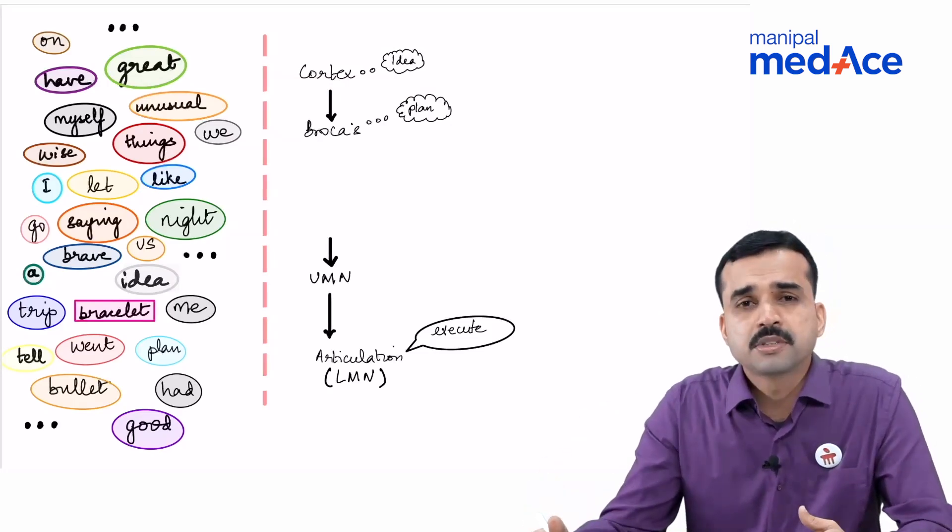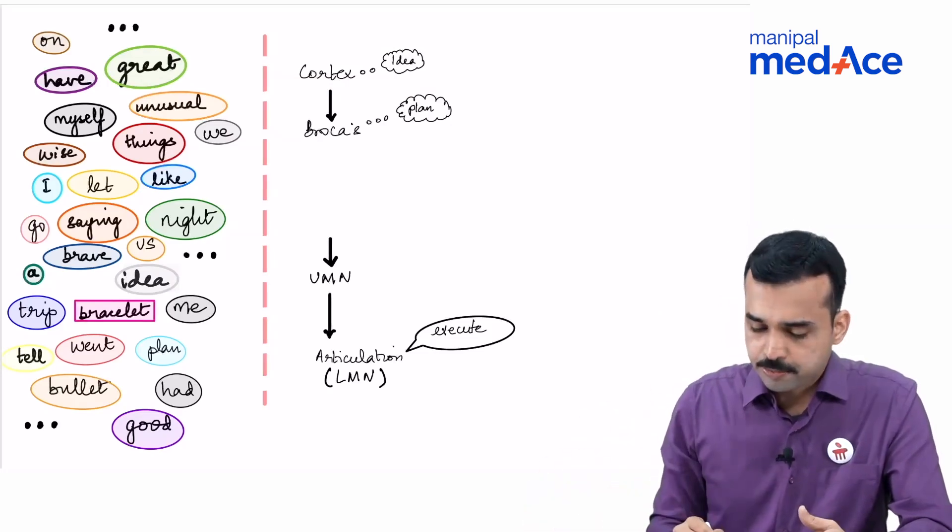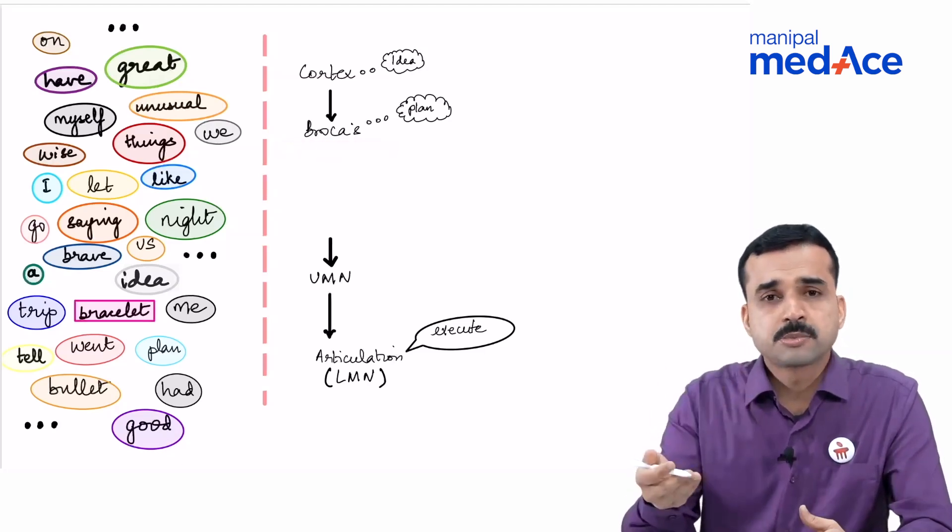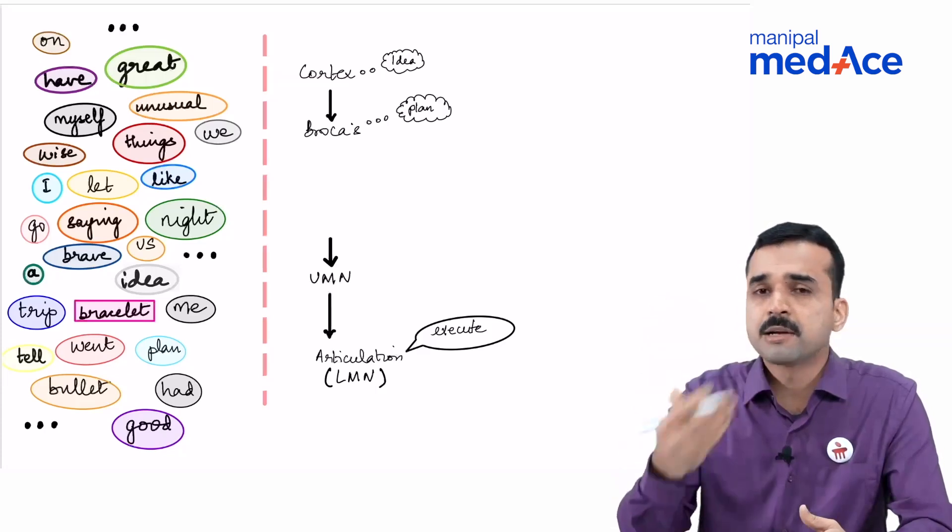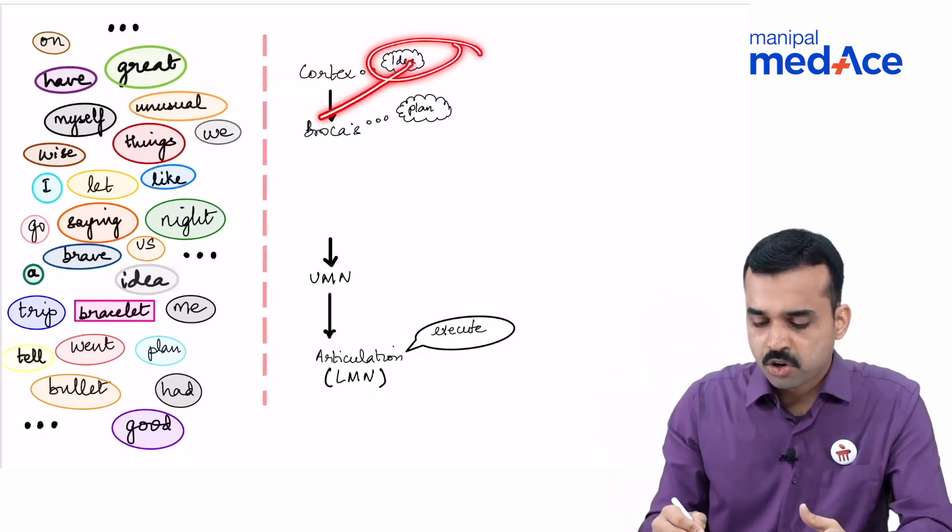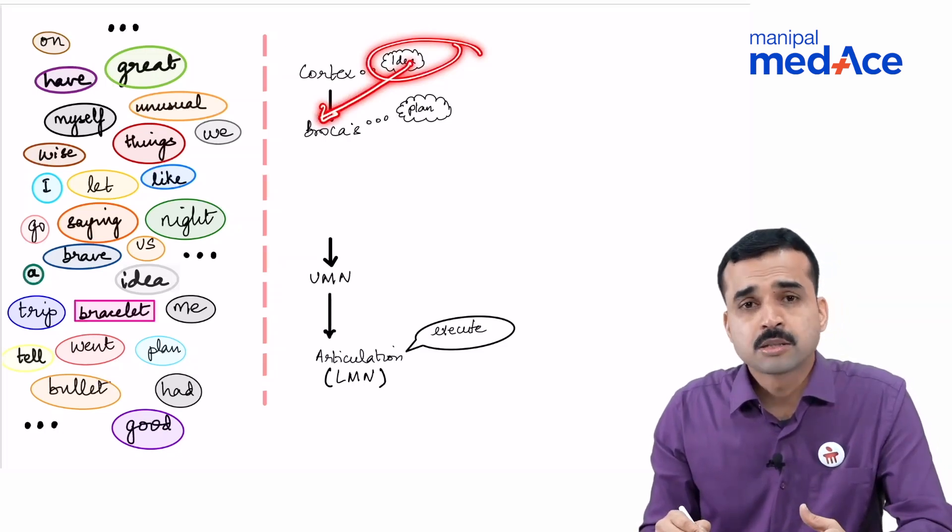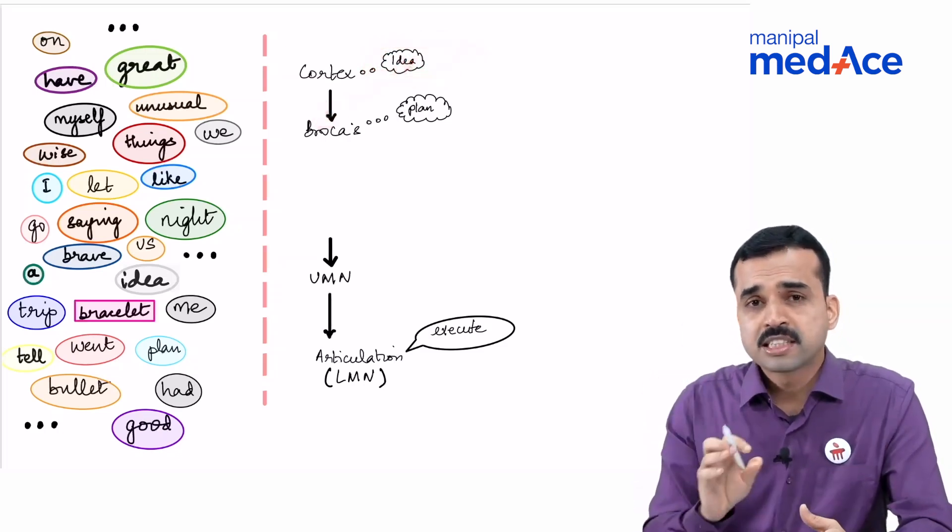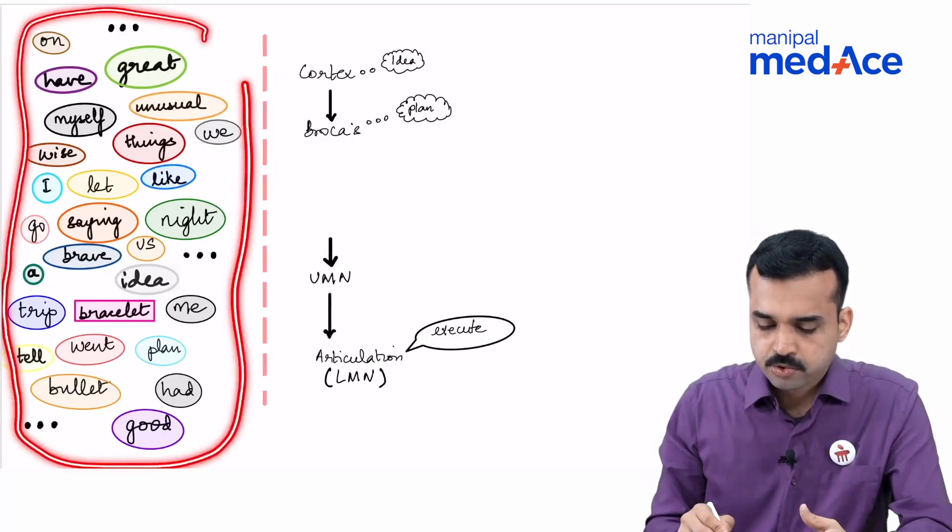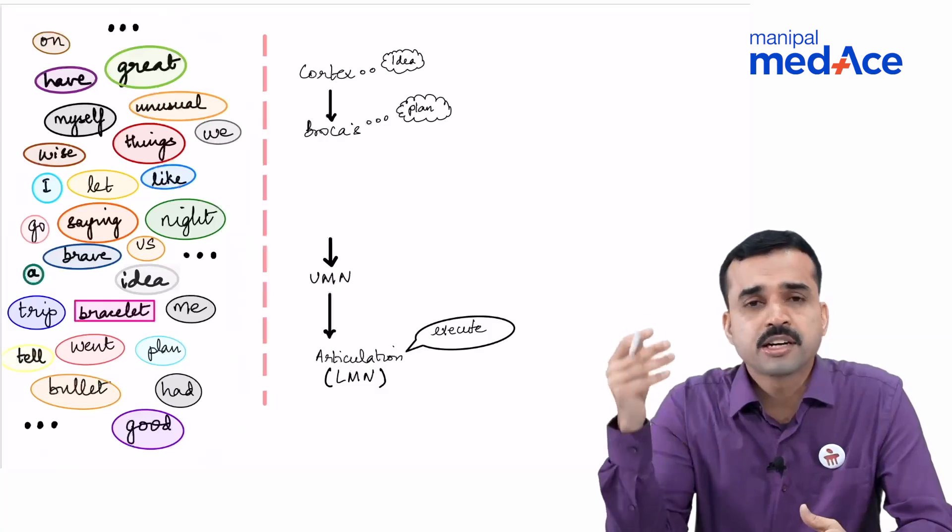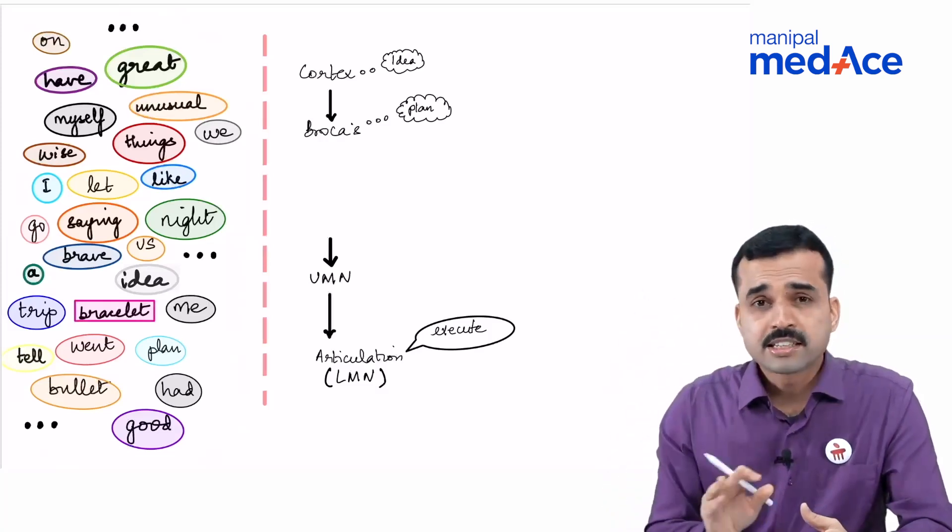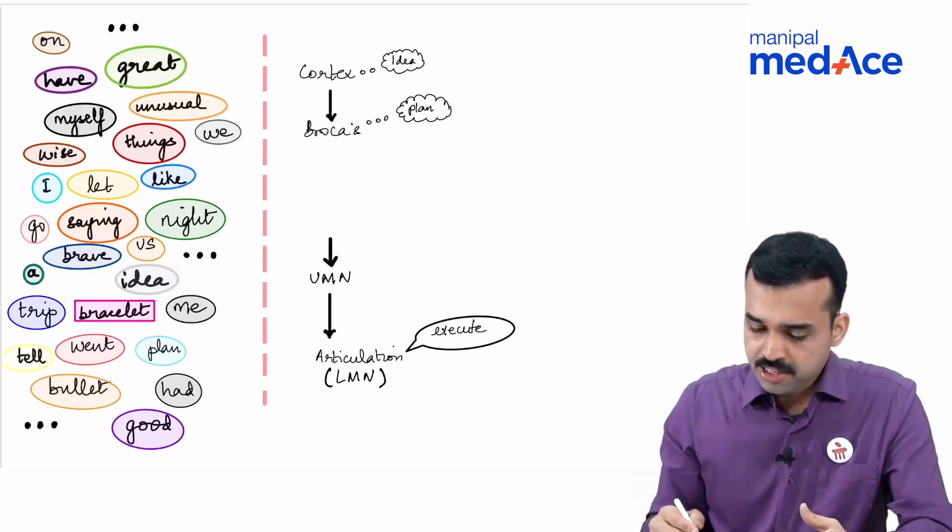Once the ideas are developed, they need to be conveyed to the Broca's area for formation of sentences. Because if I want to speak, if as I am getting ideas, I am speaking. This is possible because as soon as I get the idea, my cortex transmits it to the Broca's area. The Broca's area forms this sentence out of this entire large database of English words. So I am using English to communicate. My Broca's area chooses the right words in the right order with the right grammar and conveys that sentence.